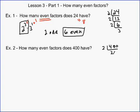Right, 2 goes into 400 200 times, 2 goes into 200 100 times, 2 goes into 100 50 times, 2 goes into 50 25 times, and then 25 is just 5 times 5. So the total number of factors in this is 2 to the 4 times 5 to the 2nd.